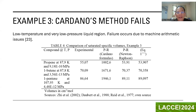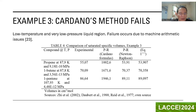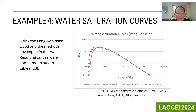In example three, a point was calculated in the low-temperature and very low-pressure liquid region, where the algebraic Cardano's method failed due to floating-point arithmetic issues. The result of our method was compared with the results of the Shi et al. article, which includes the experimental values, Cardano's formulas, and Newton-Raphson method. In example four, we calculated the water saturation curves using the Peng-Robinson equation of state, and the results were compared with the steam tables.